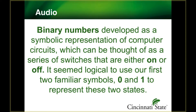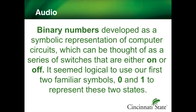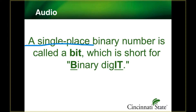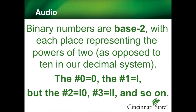Each of the circuits can be thought of as a series of switches that are either on or off. Early programmers used a system using only zeros and ones to represent these two states. You may have heard of this — it's called binary numbers. A single-place binary number is called a bit, which is short for binary digit.